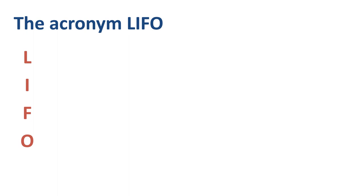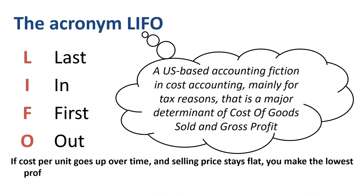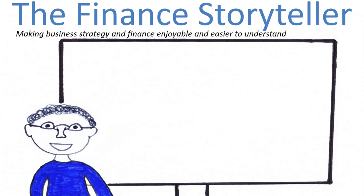Summary and Conclusion. Last in, first out is a US-based accounting fiction in cost accounting, mainly for tax reasons, that is a major determinant of cost of goods sold and gross profit. If cost per unit goes up over time and selling price stays flat, you make the lowest profit per unit in the earlier periods as you sell the newest inventory first. This is what the comment 'mainly for tax reasons' relates to. The lower the inventory value and the higher the cost of goods sold, the lower the taxable income you generate in the period. The lower your taxable income, the lower the tax charge.